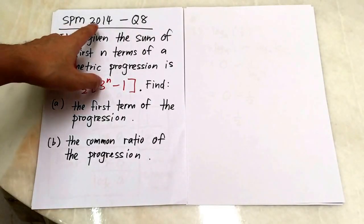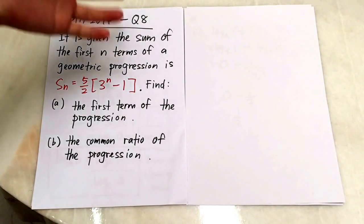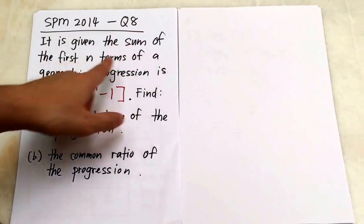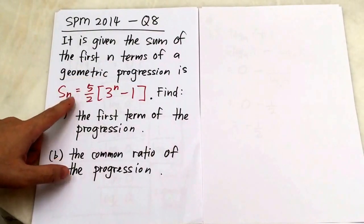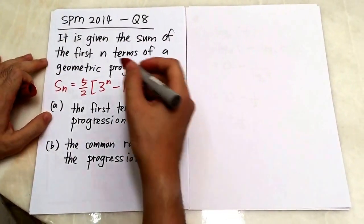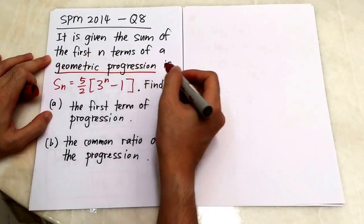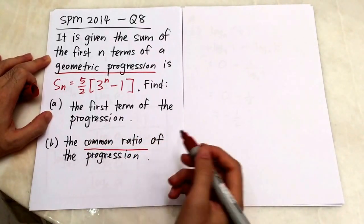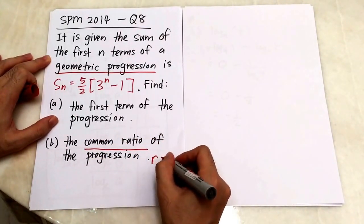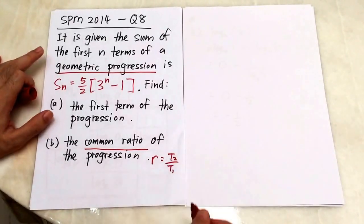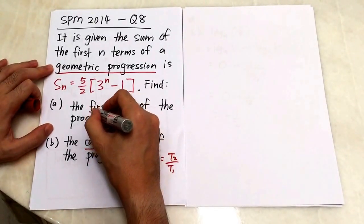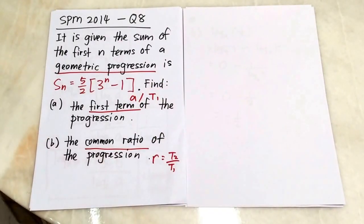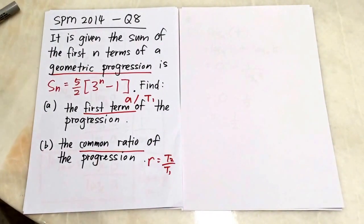This is SBM 2014 question number 8, MF paper 1. It's given that the sum of the first n terms of a geometric progression is S_n. This is a geometric progression, and the common ratio is equal to the second term divided by the first term. The first term is denoted as A, or T1.